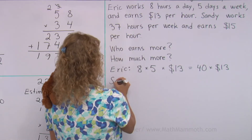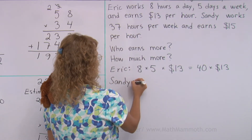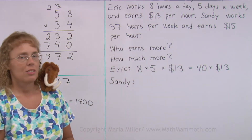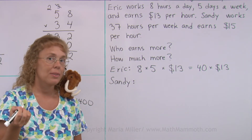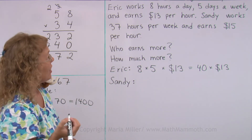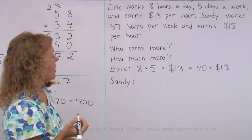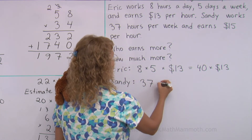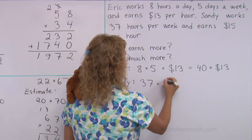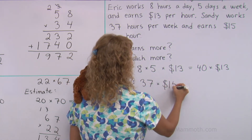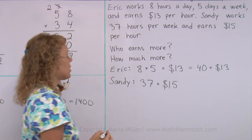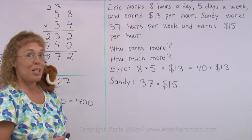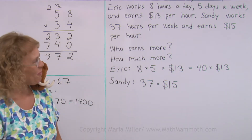Now Sandy — what do we need to calculate to find Sandy's earnings in a week? She works 37 hours and earns $15 for each hour. So this is the thing we need to calculate for Sandy.